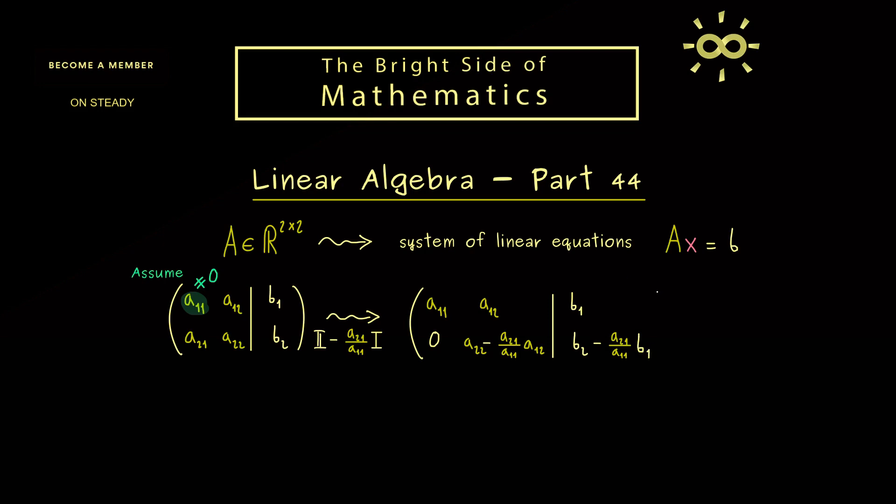And at this point the Gaussian elimination is already finished because we have our row echelon form here. So for a two-dimensional system it's very quick. However, for our general end result here, I don't like the fractions we have. Therefore I will multiply our new second row here by the factor a11. Since this is a non-zero element, the whole thing is an allowed row operation.